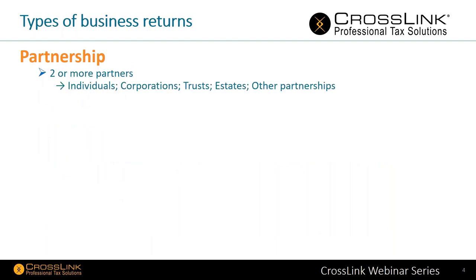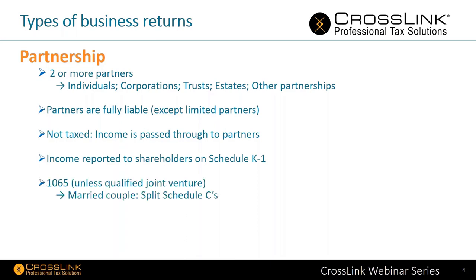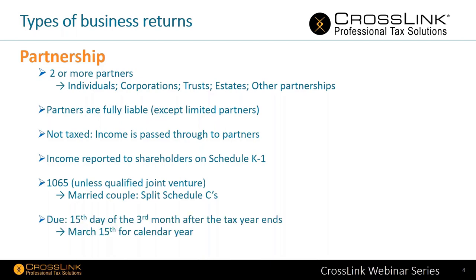The next kind of business return is a partnership, which involves two or more partners — individuals, corporations, trusts, estates, or even other partnerships. Partners are fully liable except for limited partners. Income is passed through and reported to partners on Schedule K1. The Form 1065 is used unless there's a qualified joint venture, such as a married couple splitting Schedule C's. Due dates are the 15th day of the third month after the tax year ends — March 15th for a calendar year.